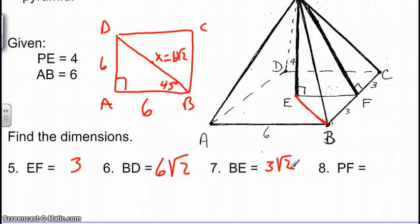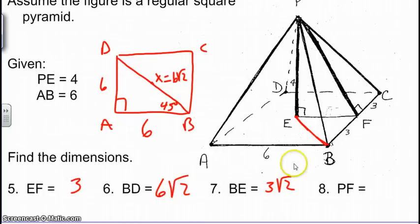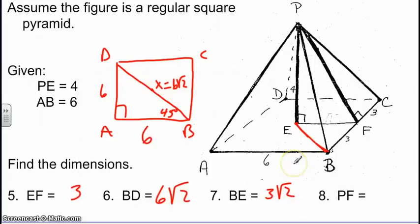And we're also looking for PF. PF is our slant height. We knew that EF is 3. We know PE is 4. So we're looking at this right triangle. And using our triples, 3, 4, PF would be 5. So 3, 4, 5 triple.